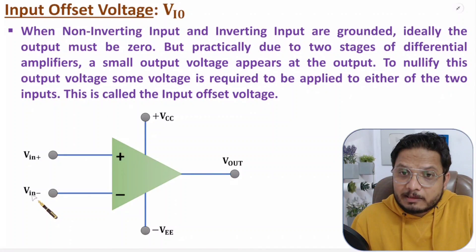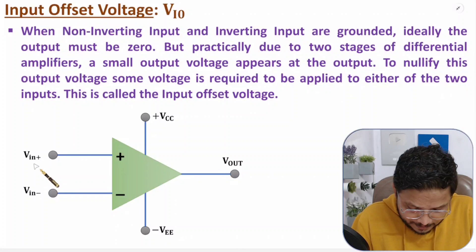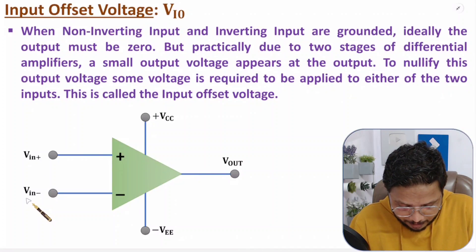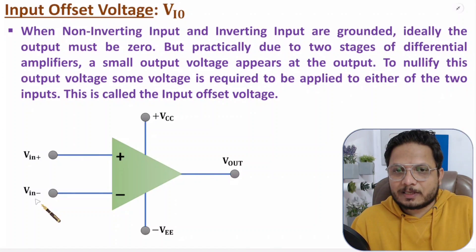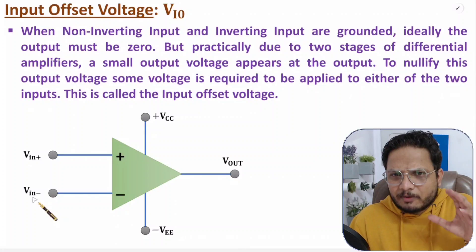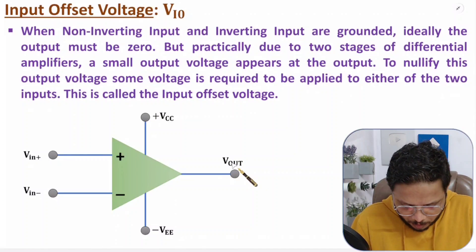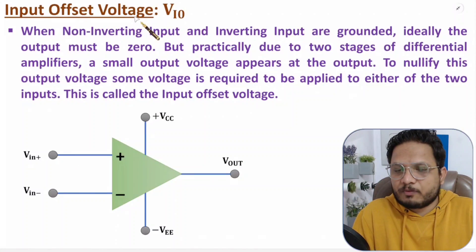That input can be applied to Vin-plus or it can be applied at Vin-minus. So in a way, to get zero output, whatever input is required, that is input offset voltage.